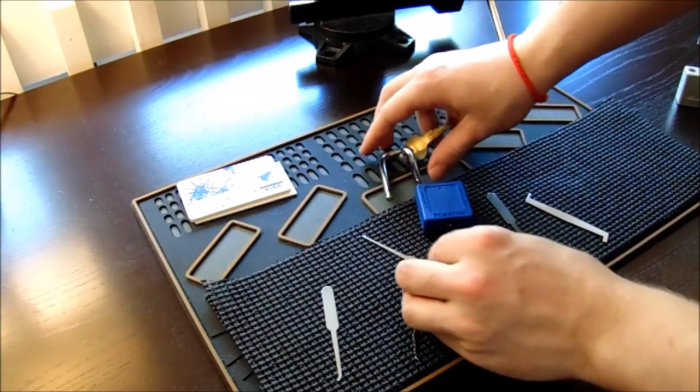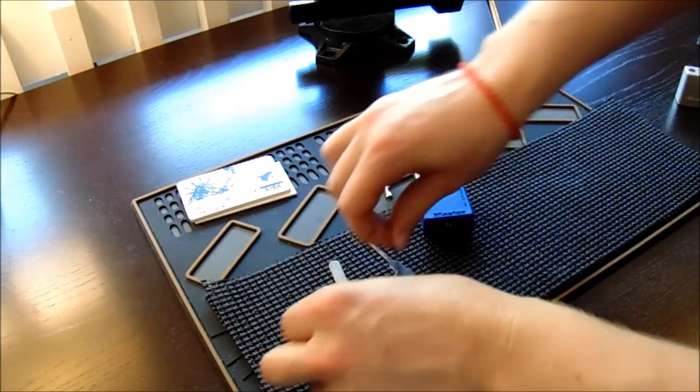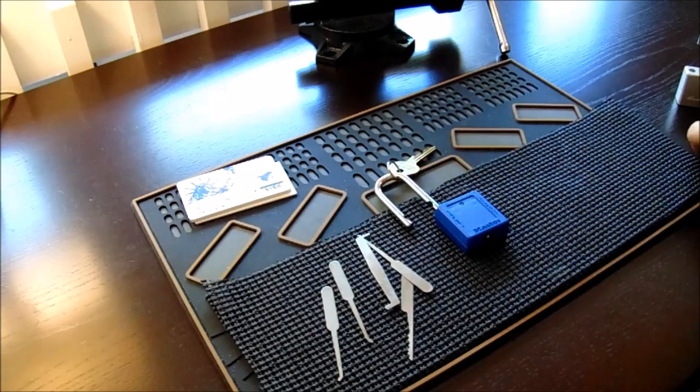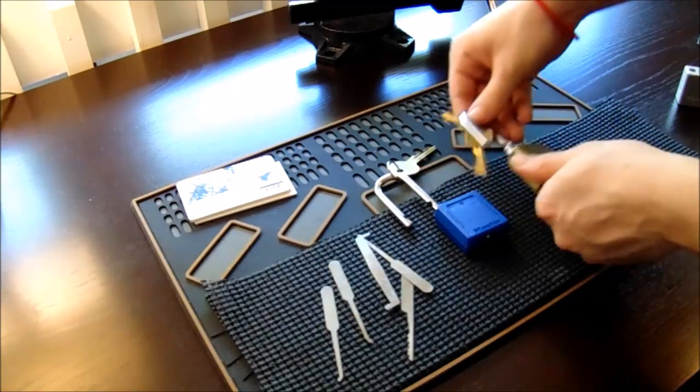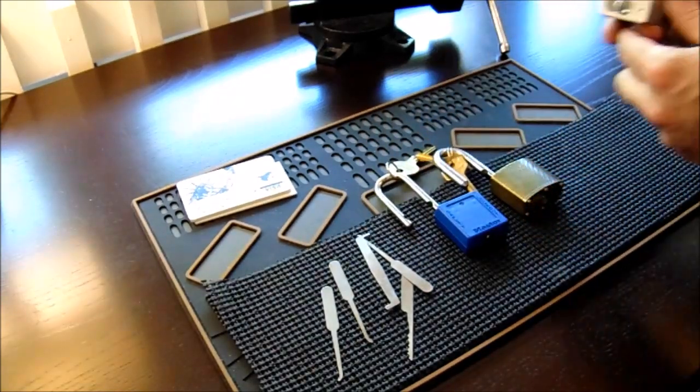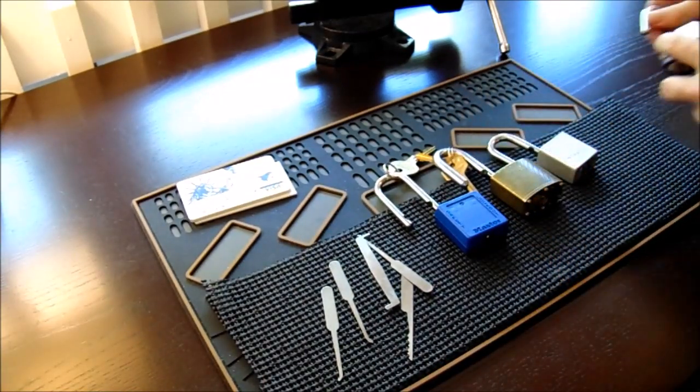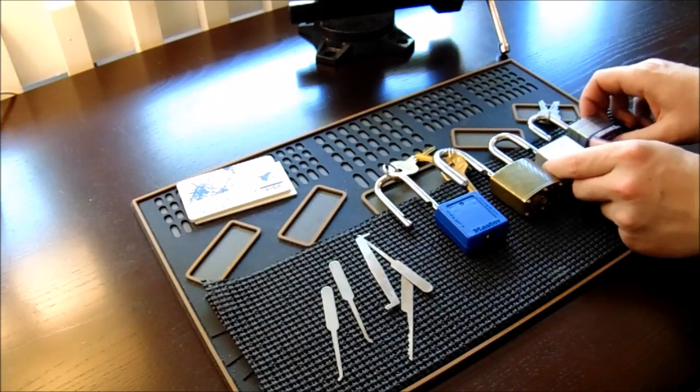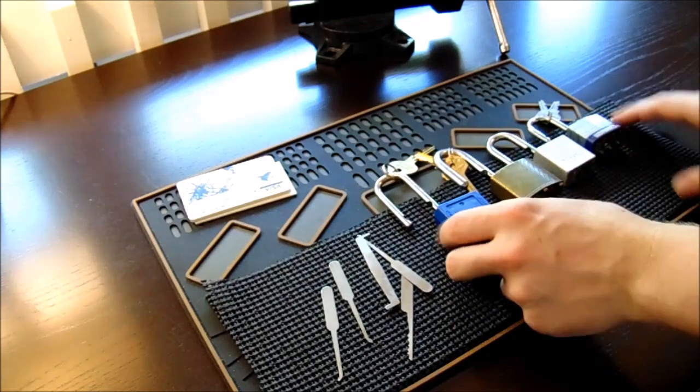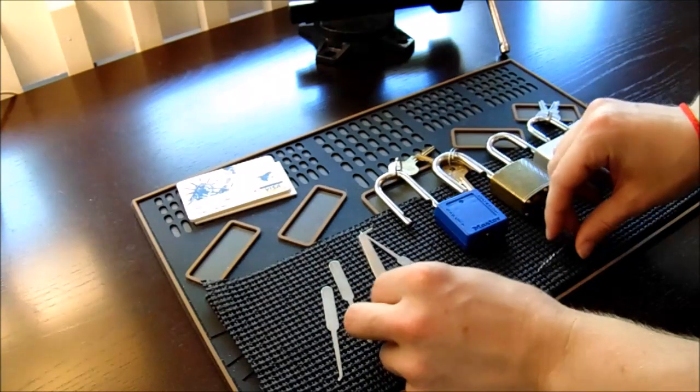We got this Master Lock 410 opened up nicely. We got this Commando Marine opened up with a little bit of trouble. The Master Lock 570 opened up. And the Brinks 40 millimeter. All these locks contained multiple security pins. They're good little locks for people learning.